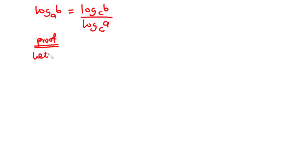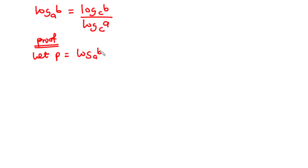Let P be equal to log B base A. We need to convert this equation to an exponential equation. We do so by transferring P to be an exponent of the base A and then equating the value to B. So that becomes B equals A exponent P. By this, we've been able to change this into an exponential equation.